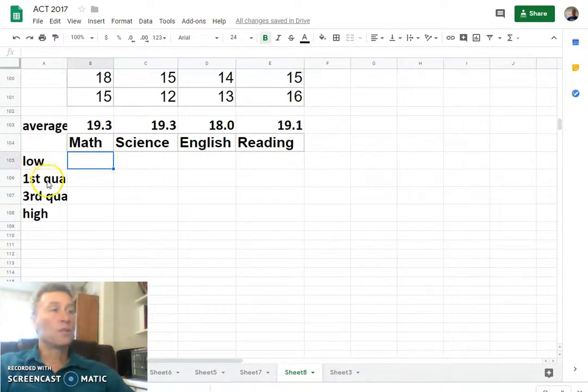What we need is a low, first quartile, third quartile, and high to make a box plot.